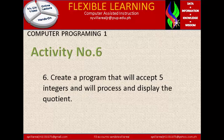Activity number 6: create a program that will accept 5 integers, process them, and display the quotient. This involves division. Make sure the first number is the largest and the last is the lowest to get the quotient; otherwise the result may become negative.